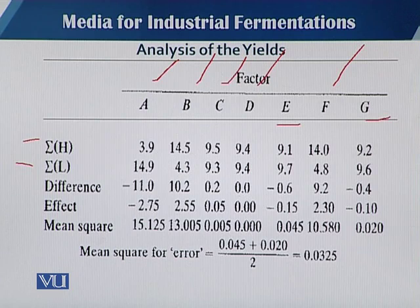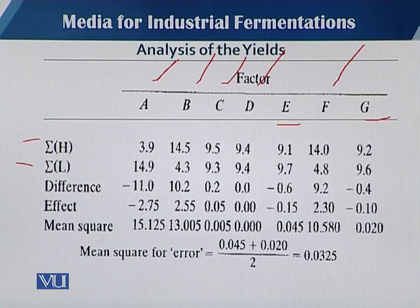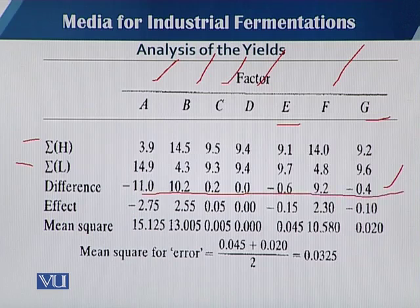High response in A is 3.9, low response is 14.9. The differences, including the sign, are: -11.0, 10.2, 0.2, 0.0, -0.6, 9.2, and -0.4. We calculated these differences using the formula from the previous slide.